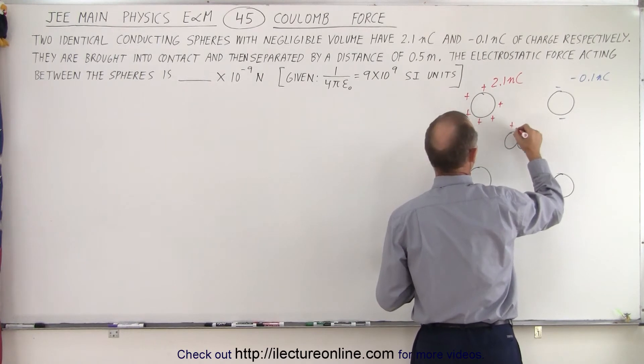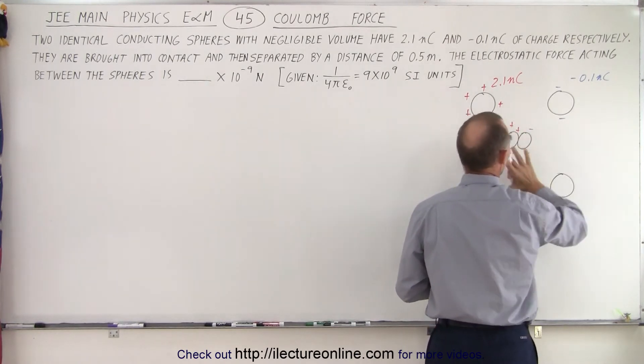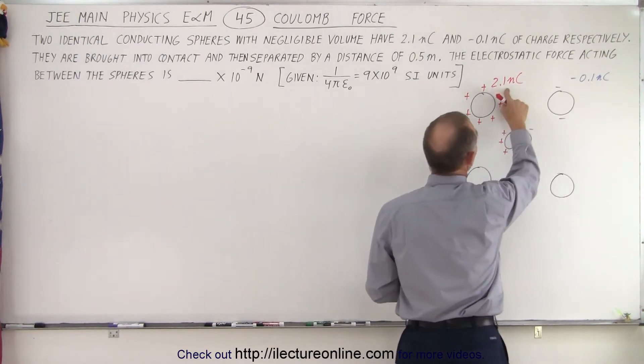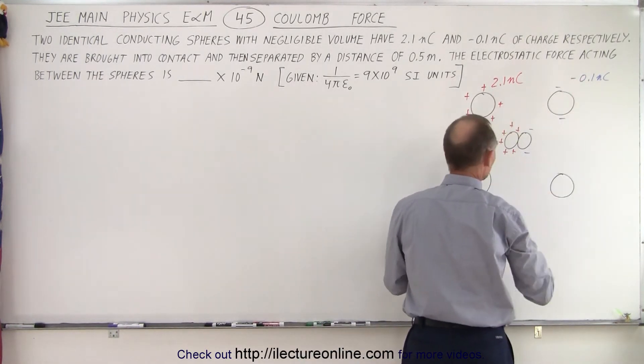The charges will then redistribute themselves so that the total charge, if you add the two together, we get 2.1 minus 0.1, so q_total is equal to 2 nanocoulombs.